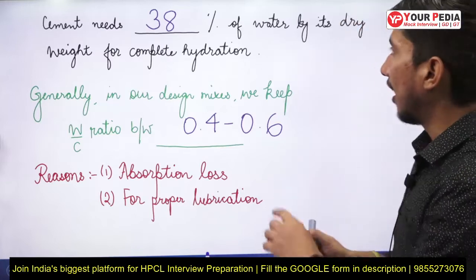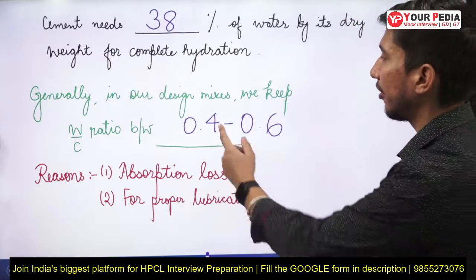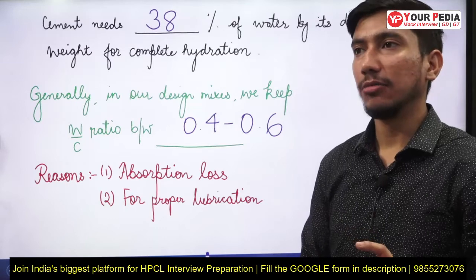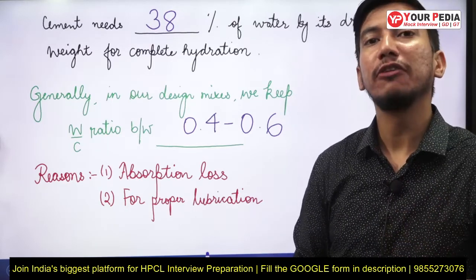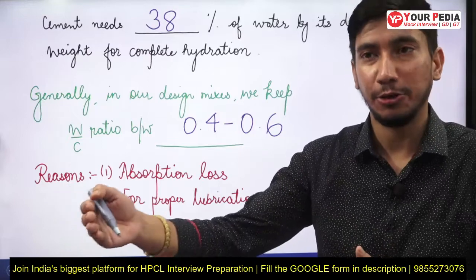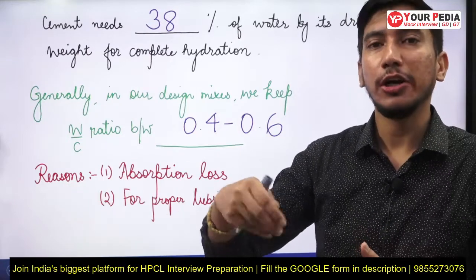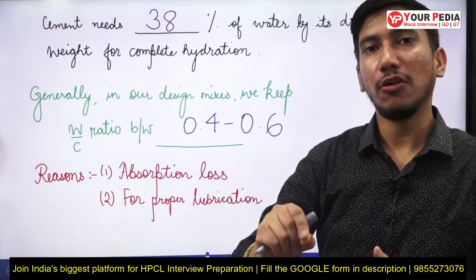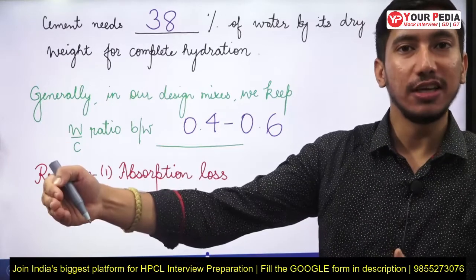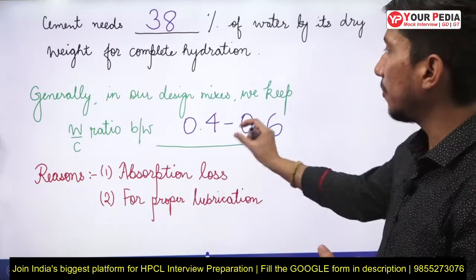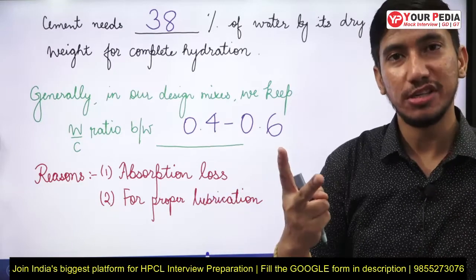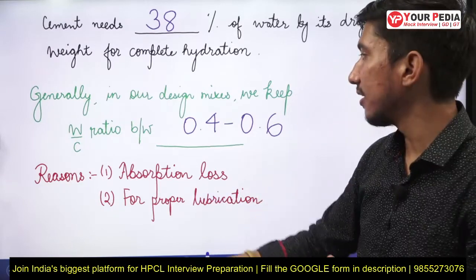So we keep the water-cement ratio between 0.4 and 0.6. But the question arises: if we only need 40% water, why do we provide more than that? According to Abram's law, the strength of concrete will decrease if its water-cement ratio is increased. We keep a little extra water for two major reasons.